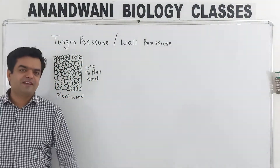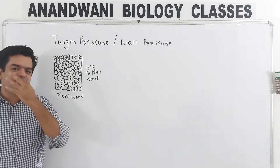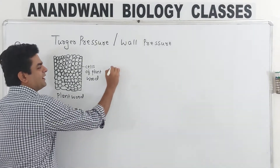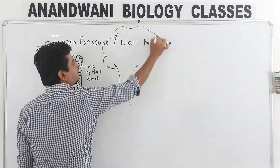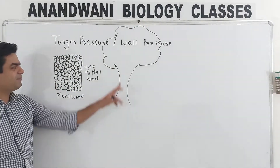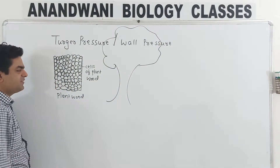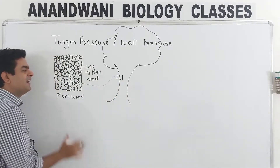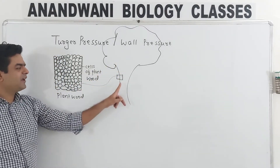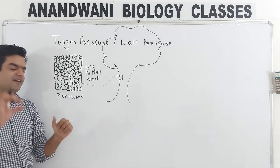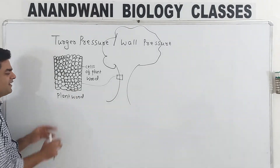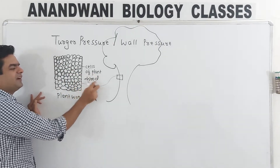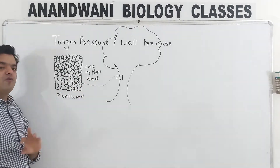So guys, what does it mean by turgor pressure, which is also called wall pressure? Now we can see that this is a plant. This is the stem portion of the plant. Just imagine this stem portion is taken from this area — this is the area I have collected and zoomed. You can see this is a plant wood material taken from the stem, and these are the small cells present in the plant body.